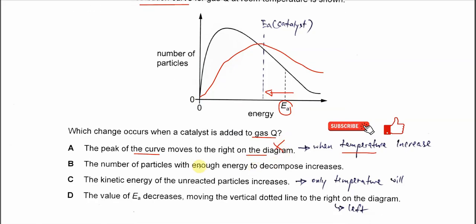B: The number of particles with enough energy to decompose increases. Let's look at the comparison. Before catalyst, this is the number or the proportion of particles that can undergo decomposition. But when we add the catalyst, the number of particles now increases to this amount, which is much larger than without catalyst. So therefore B is correct. The number of particles with enough energy to decompose increases.